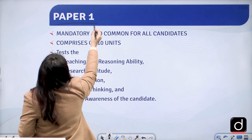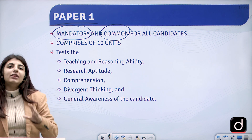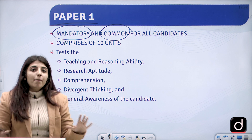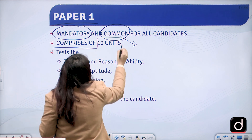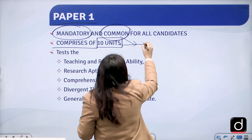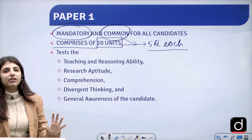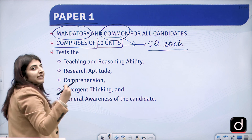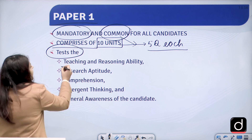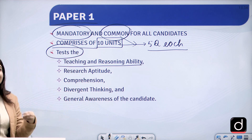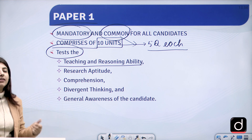Paper 1 is mandatory and common for all candidates, meaning the syllabus and paper pattern are common for everyone. It comprises 10 units, and 5 questions are asked from each, though the weightage sometimes differs — sometimes 5 to 6 questions from one unit. Paper 1 basically tests your teaching and reasoning ability, and they want to know how well you are aware of teacher-centric and learner-centric methods.